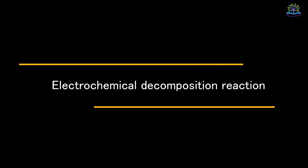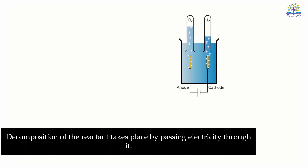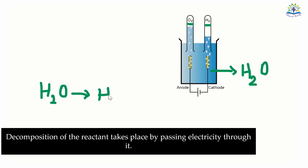Electrochemical decomposition: here, decomposition of the reactant takes place by passing electricity through it. To split water to get its components, we have to supply electricity. Take some acidified water and pass electricity through it — it splits to form hydrogen and oxygen.